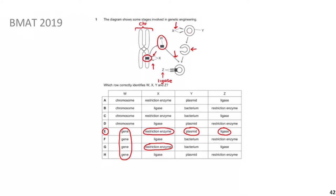To understand the concept properly, consider the classic example: insulin production. Insulin is used for diabetic patients. Previously, insulin was extracted from pigs, but pig insulin isn't identical to human insulin. Genetic engineering allows us to manufacture human insulin, which is better. One issue with the diagram, though, is that the cuts shown produce blunt ends — which is not ideal for this process.